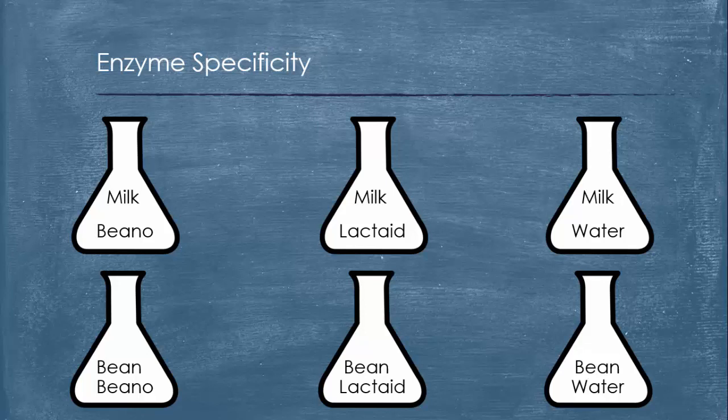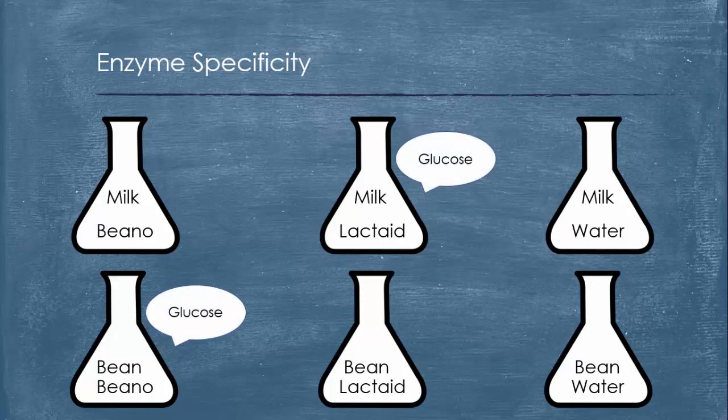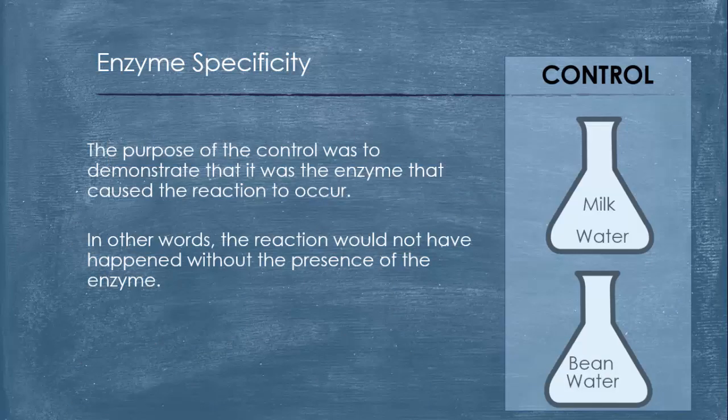We took our experiment with six different mixtures. We mixed milk and beano, milk and lactase, milk and water, and then we mixed bean and beano, bean and lactase, and bean in water. What we found was that when we mixed milk and lactase, that formed glucose, and we mixed bean and beano, that formed glucose. But in the mixtures with milk and beano, there was no glucose formed, and bean in lactase, there was no glucose formed.